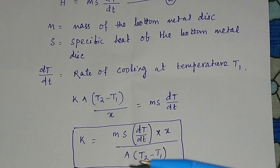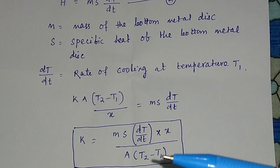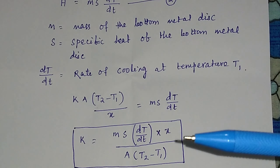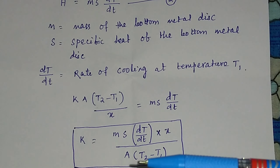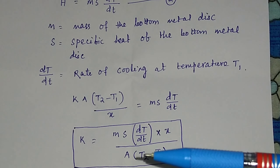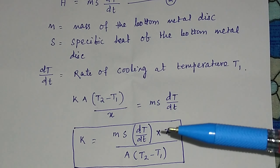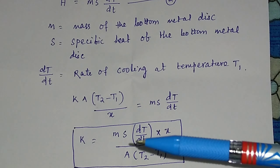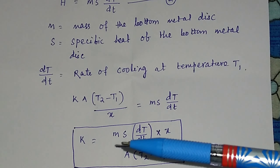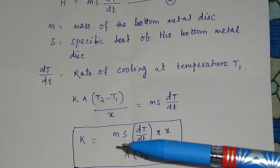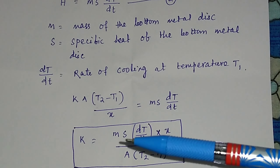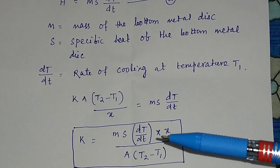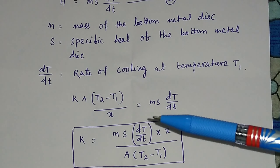All the values in this formula have been discussed: T1 is the temperature of the thermometer in the bottom metal disk; A is the area calculated from πR² using a slide caliper; X is the thickness of the sample measured by a screw gauge; m is the mass of the bottom metal disk measured by a physical balance; s is the specific heat taken from a standard table; and dT/dt is the rate of cooling at temperature T1, which you find by plotting a graph.